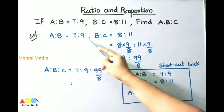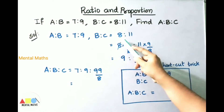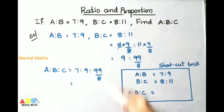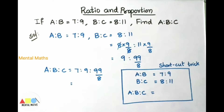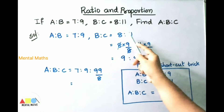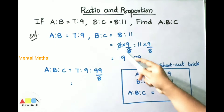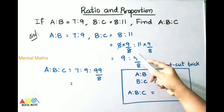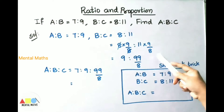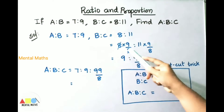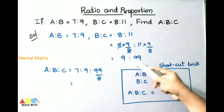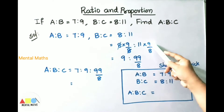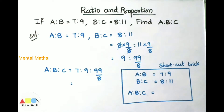Observe here the B value is 9 and here the B value is 8. So to make the second proportion equal, we are going to multiply both terms by 9 by 8. So 8 into 9 by 8 is to 11 into 9 by 8. Here the 8s are cancelled, giving 9 is to 99 by 8.